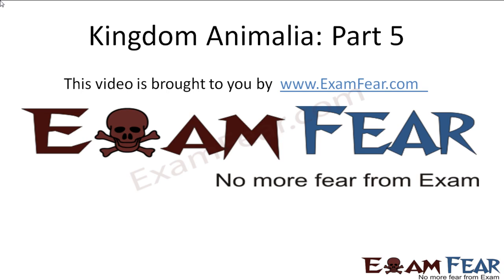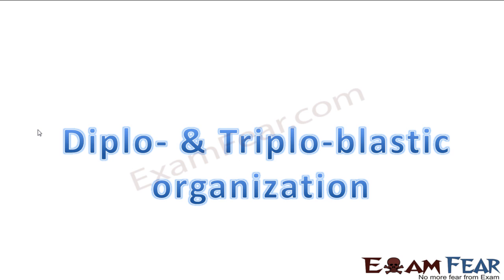Hello friends, this video on Kingdom Animalia part 5 is brought to you by examfear.com. So with this, we saw that based on symmetry, we can divide organisms into three types: asymmetrical animals, radially symmetrical animals, and bilaterally symmetrical animals. So let us now talk about the third parameter, that is diploblastic and triploblastic organization.